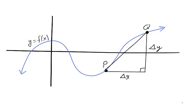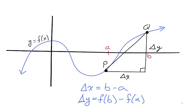The base has length delta x, which is the difference in x values between p and q, while the side has length delta y, the difference in the y values. The hypotenuse is a segment of the secant line. The amount of function change between p and q is delta y, or f(b) minus f(a).